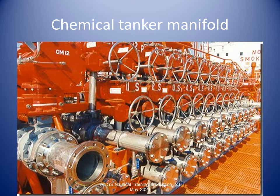This is a picture of the cargo pipeline manifold of a chemical tanker. Cargo contamination is a major issue on chemical tankers. It is quite common to have independent tanks, transfer pumps and lines for each grade on a chemical tanker.